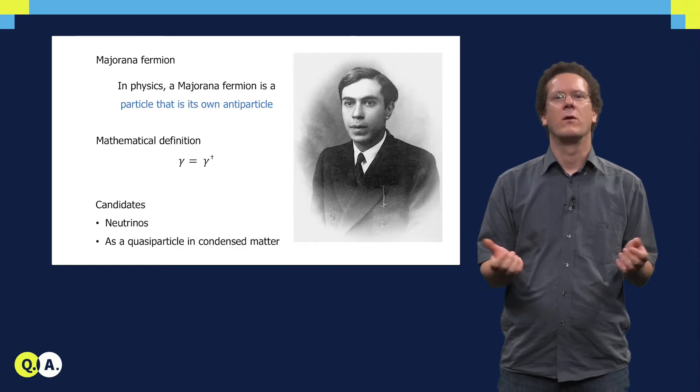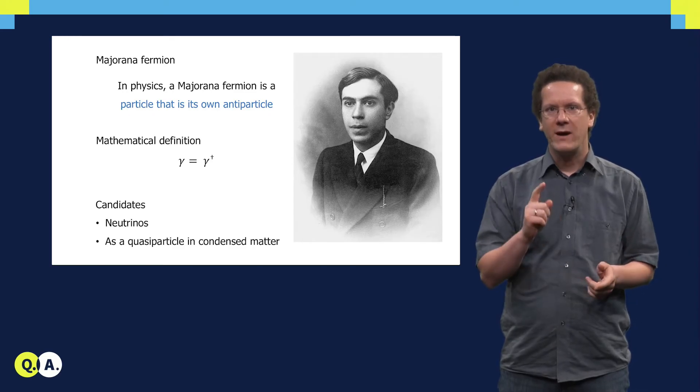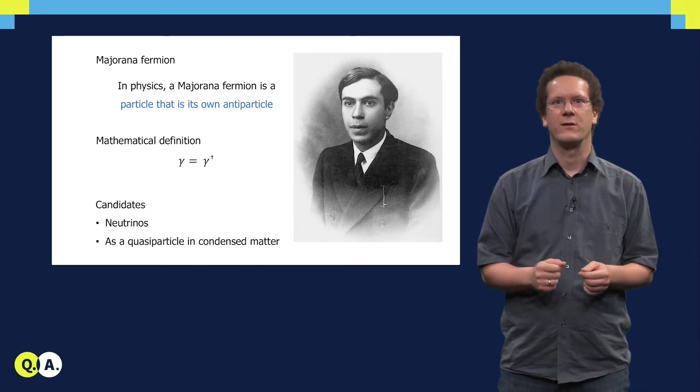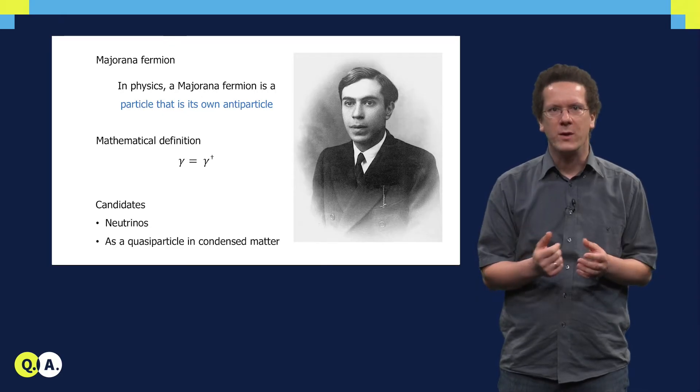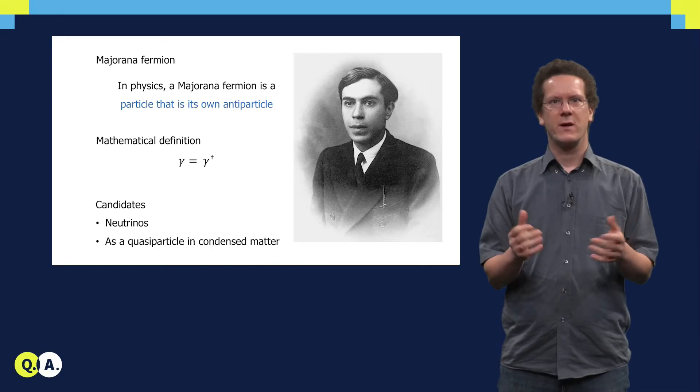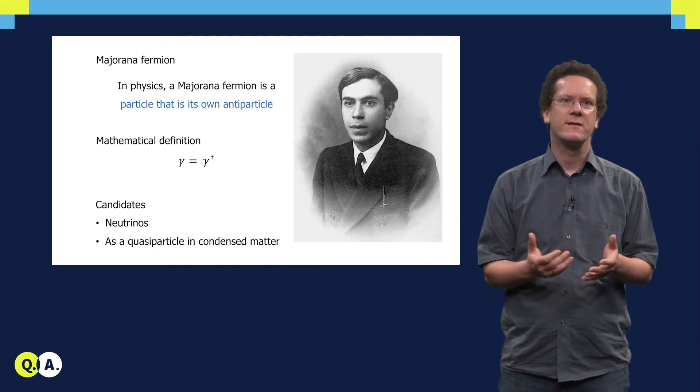These are examples of what we call Dirac fermions. However, there is also a separate kind of fermion in high energy physics, which is called a Majorana fermion. It is special because it is a fermion which is its own antiparticle.